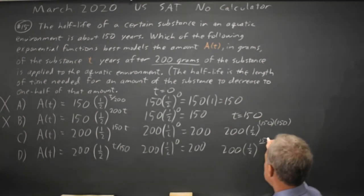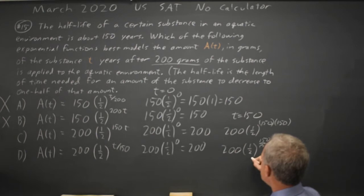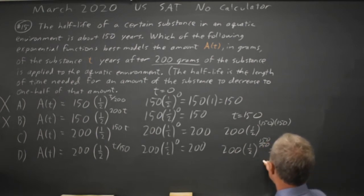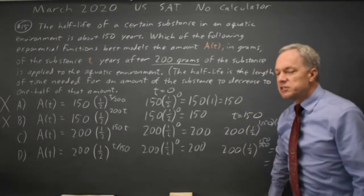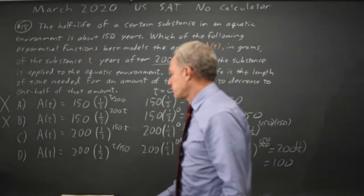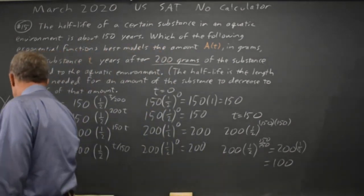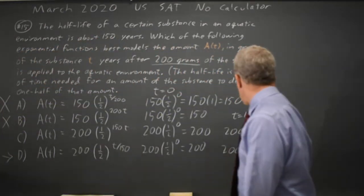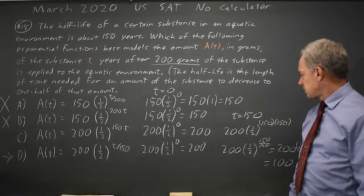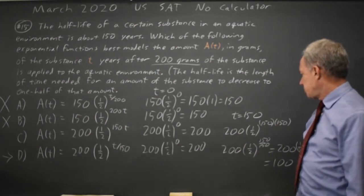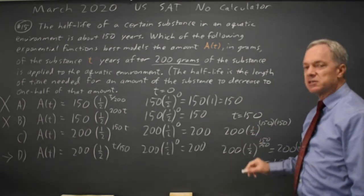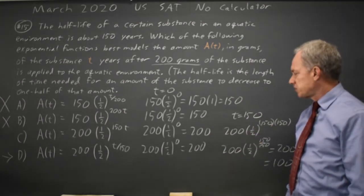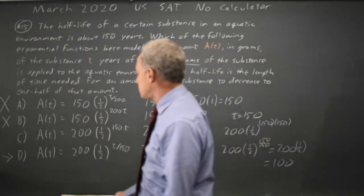For choice D, one-half to the 1 gives us 100 grams of the substance — half the original amount, which is correct. For choice C, 150 times 150 is 22,500 — some huge number — and one-half to that power is going to be a very small fraction of the 200 grams. So choice C is not correct.